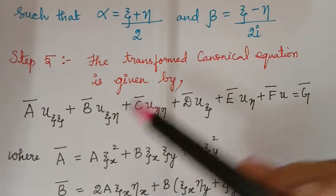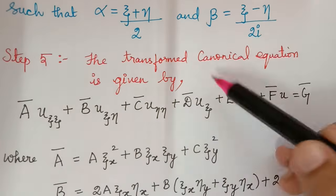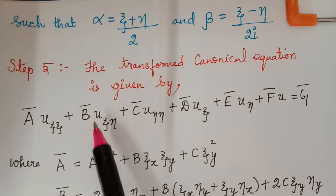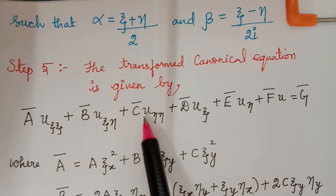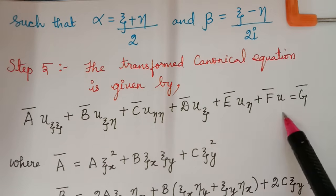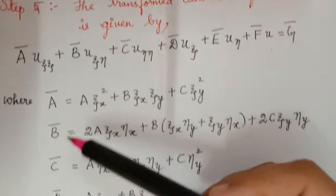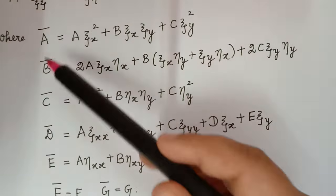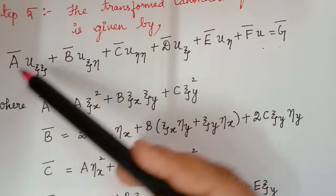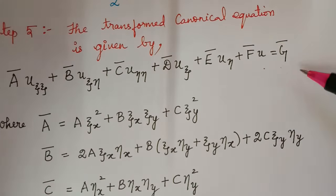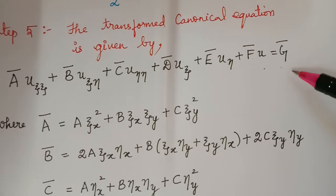After making this transformation, step 5 gives the transformed canonical equation as: A-bar·Uξξ plus B-bar·Uξη plus C-bar·Uηη plus D-bar·Uξ plus E-bar·Uη plus F-bar·U equals G-bar, where the values of A-bar, B-bar, C-bar, D-bar, E-bar, F-bar are given. Using these we substitute into the equation to obtain the transformed canonical form, after which the PDE becomes much easier to solve.